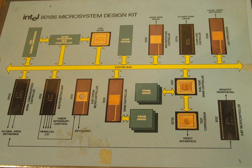The SDK-85 MCS-85 system design kit was a single-board microcomputer system kit using the 8085 processor, clocked at 3 MHz with a 1.3 µs instruction cycle time. It contained all components required to complete construction of the kit, including LED display, keyboard, resistors, caps, crystal, and miscellaneous hardware.